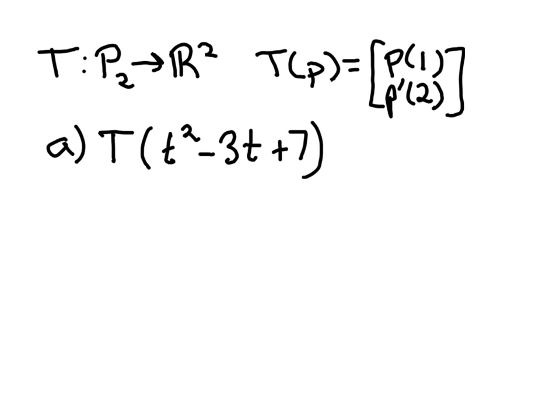So in Part A, first of all, you're given a transformation from the collection of polynomials, degree 2 or less, to the set of all two-dimensional vectors with real entries. The way that these polynomials are transformed into a vector in ℝ² is according to this setup here. The first entry is going to be the value of that polynomial at 1. The second entry is going to be the value of the derivative at 2.